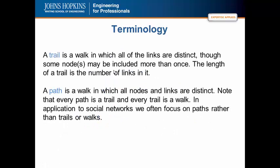A path is a walk in which all the nodes and links are distinct. So note that every path is a trail and every trail is a walk. In social networks, we often focus on the path and there is a sociological meaning for that. The likelihood of relationships traveling more than length three through a network decays to zero. Therefore, there is more sociological meaning in considering paths where the reuse of nodes and links are restricted.